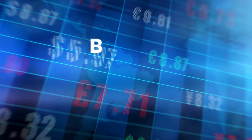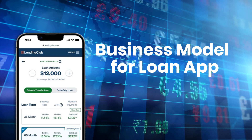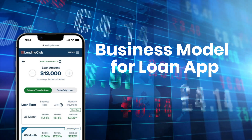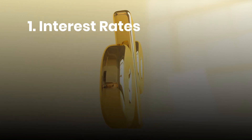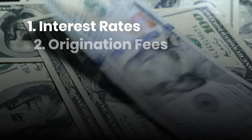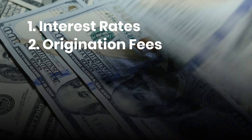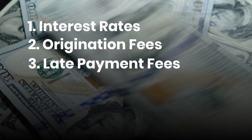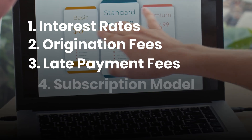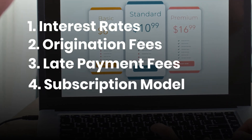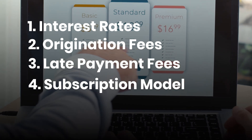Next, let's talk about the business model for your personal loan app. Your app can generate revenue through various methods. Number one is interest rates — charge interest on loans provided, like a bank does. Number two is origination fees — a fee for processing the loan, similar to a service fee. Number three is late payment fees — charge fees for late payments as a penalty. Number four is a subscription model — offer premium features for a subscription fee, much like Netflix does for entertainment content.